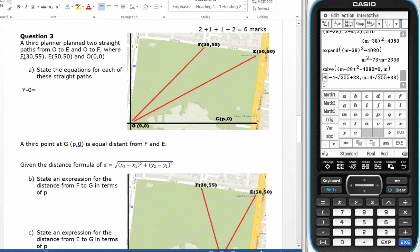Equals the gradient, which will be rise over run from zero up to 55. So 55 divided by the run will be zero to 30, so 30, times x minus x1, which is zero.